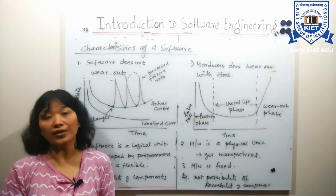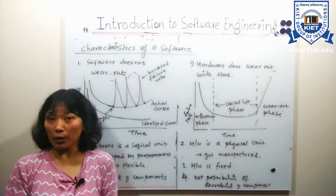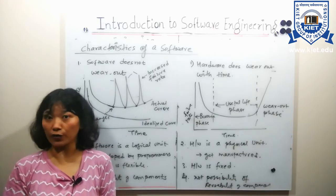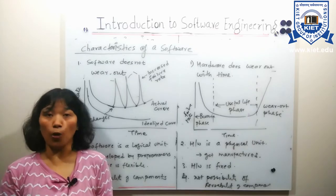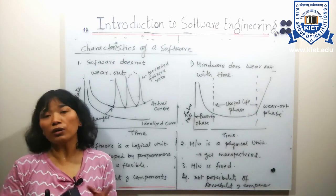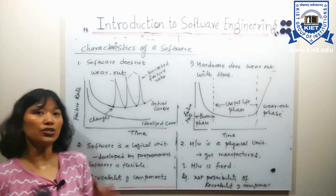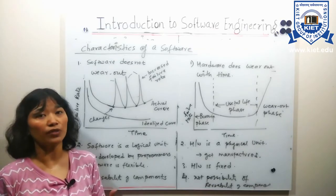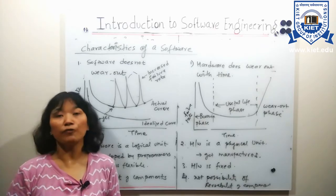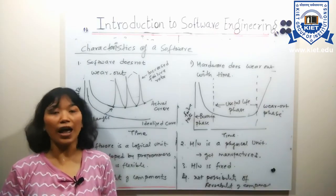I hope you all understand today's topic — introduction to software engineering. You should now be able to understand the definition of software engineering, the components of software including the program, operating procedures, and documentation, and the difference between documentation and operating procedures. Finally, you should be able to describe the characteristics of software as compared to hardware. Thank you, students. If you have any queries, write in the comment box. Keep watching and keep listening.